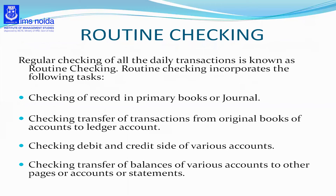Next, what is routine checking? There are certain records and books which are common to all types of business organizations. The checking of such common records and books carried on by the auditor as a matter of routine is known as routine checking in auditing. It incorporates basically four tasks: first is checking of recording in primary books or journal; second is checking the transfer of transactions from original books of accounts to the ledger account.